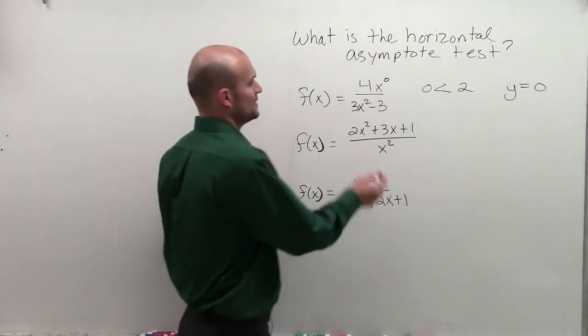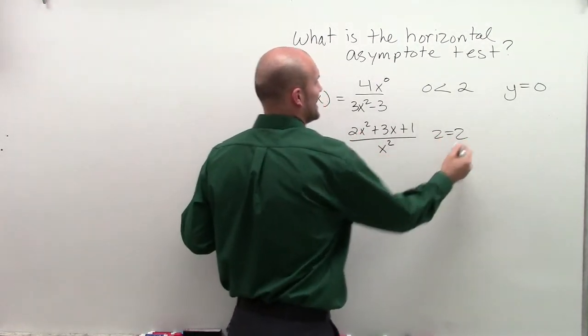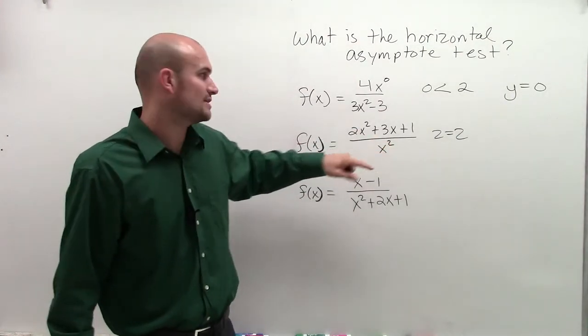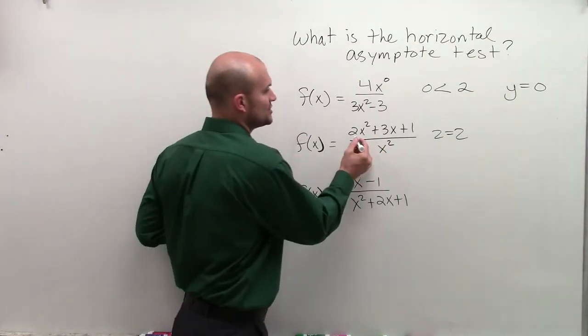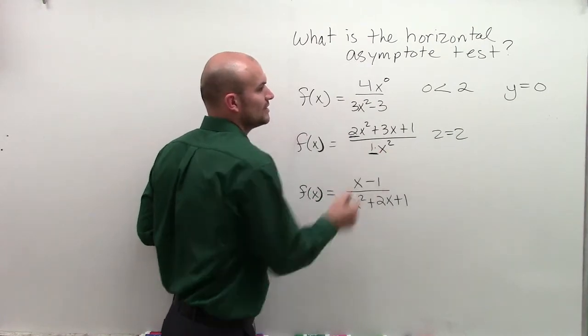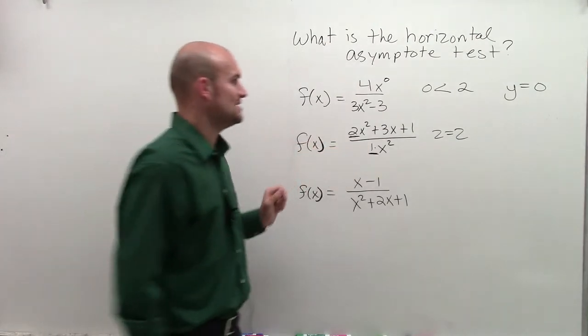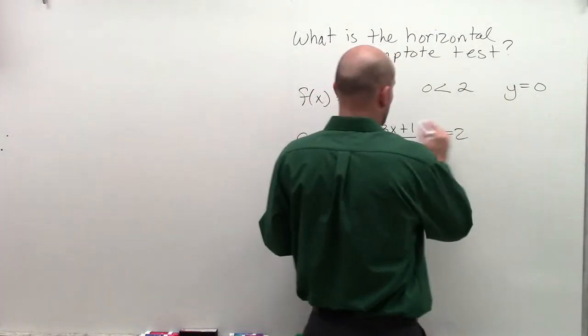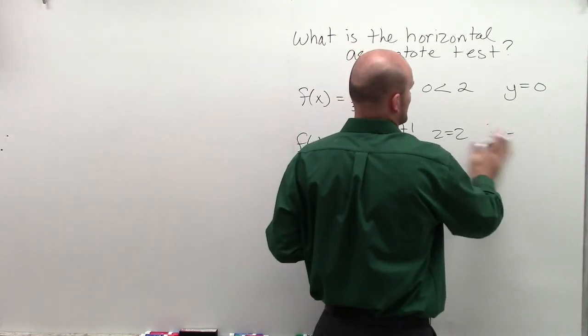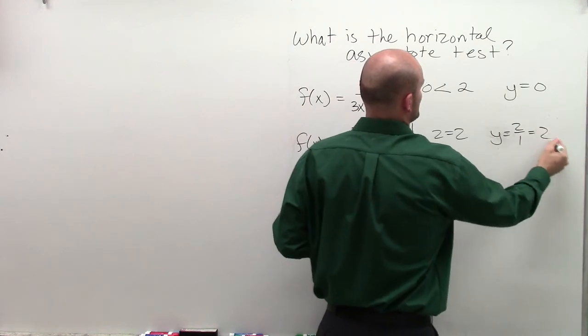Now, let's say that your leading degree is equal in the numerator and the denominator. So now when it's equal, what you're going to do is you're going to take what we call our leading coefficient, which in this case is 2. And if there's nothing there, we can write 1. So you're going to now do the ratio of 2 over 1, let's write it as y equals 2 over 1, which is just equal to 2.